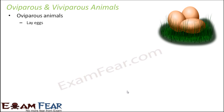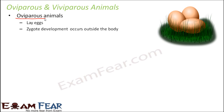Oviparous animals lay eggs, and from inside the egg, the protected young ones are hatched later. So zygote development occurs outside the body. The egg has a hard shell outside to protect the inner content. Inside is the zygote, which develops to form an embryo and gradually a little organism. This entire development takes place inside the egg, which has already been released outside the female body. Eggs are covered by a calcareous shell which acts as a protective covering.